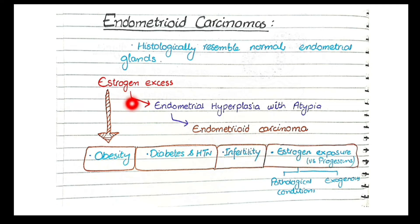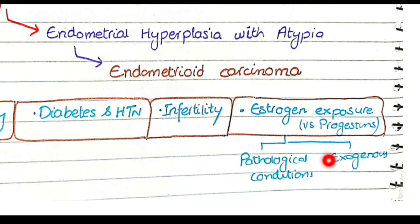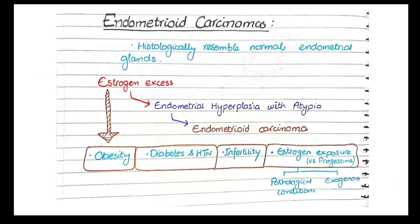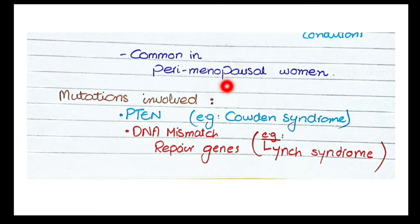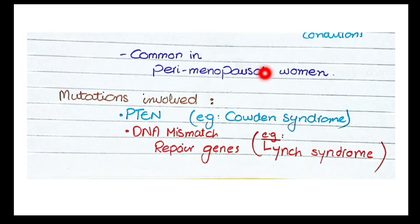Another cause of estrogen excess is estrogen-producing lesions from pathological conditions such as polycystic ovarian syndrome or granulosa-theca cell tumors, or it can be caused by exogenous administration of estrogen without progesterone. This is common in perimenopausal women, where the risk of endometrial hyperplasia is greatest, making endometrioid carcinoma most common in the perimenopausal age group.